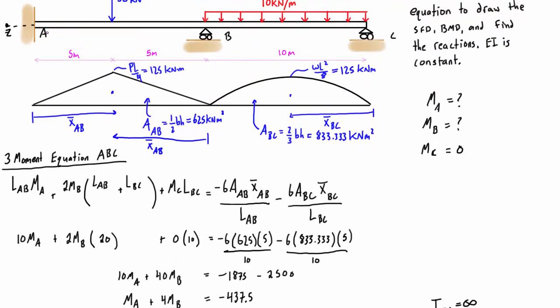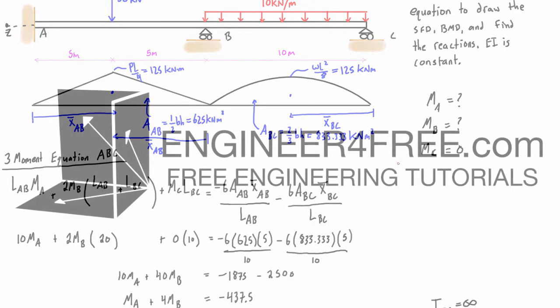So now we know we have MA and MB, and we already knew that MC was equal to zero. So I'm going to pause the video here, and we're going to finish off the video by drawing the shear force diagram, bending moment diagram, and finding the reactions in part two. So guys, thanks a lot for watching, and I will see you in the next video where we finish up this problem.